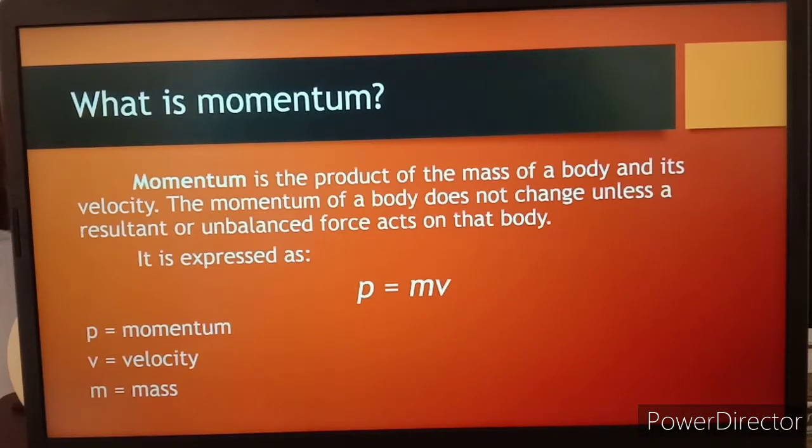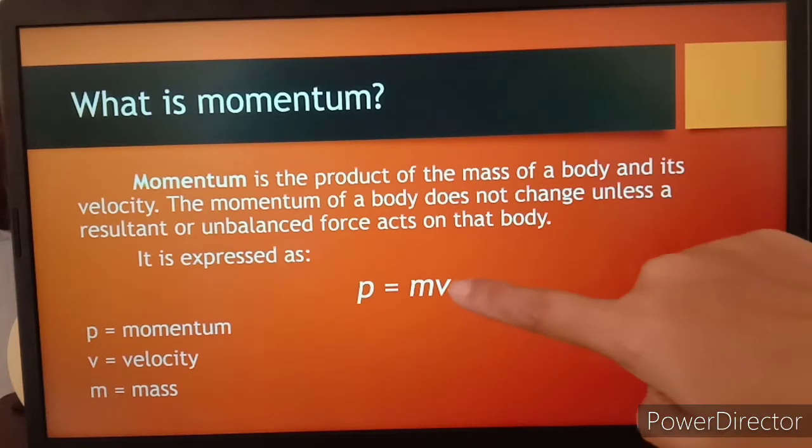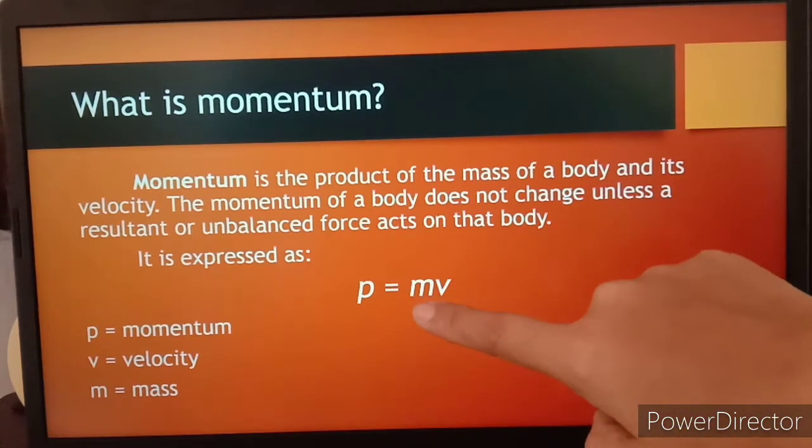What is momentum? It is the product of the mass of a body and its velocity. The momentum of a body does not change unless a resultant or unbalanced force acts on that body. It is expressed as p = mv, where p represents momentum, v is velocity, and m is mass.